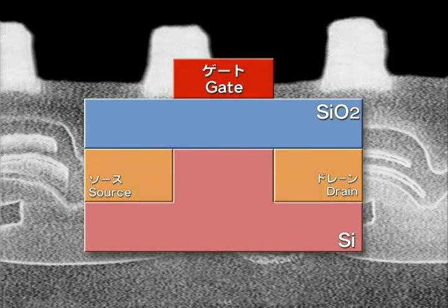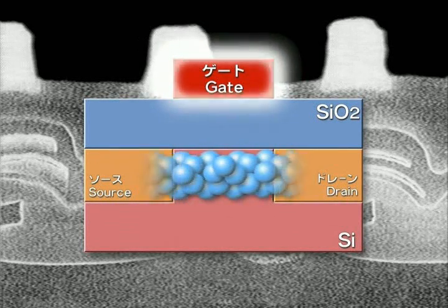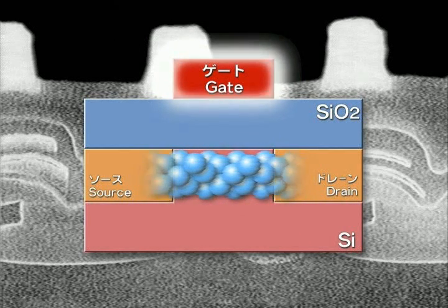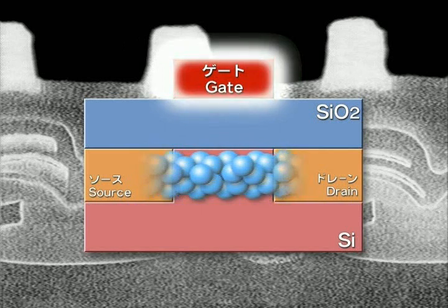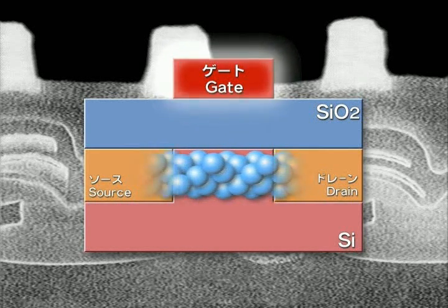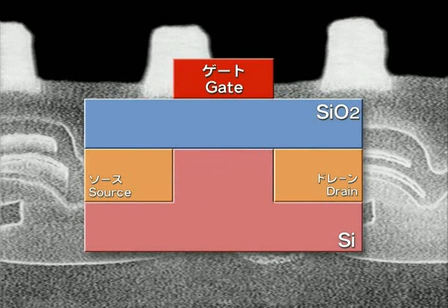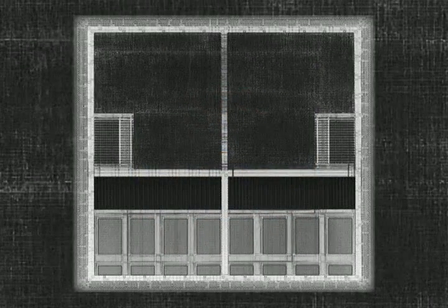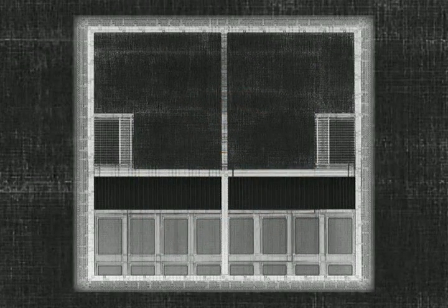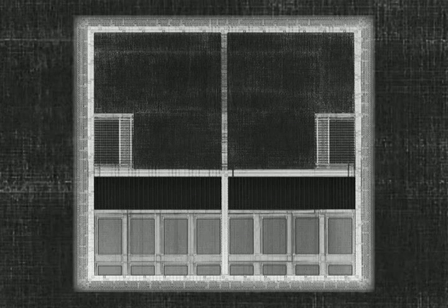For currently available devices in which electrons are handled as waves and a total of approximately 100,000 electrons are used to send one bit of information, power consumption in the device increases proportionately with the progress of large-scale integration. For example, a typical present-day processor consumes 50 watts of power.